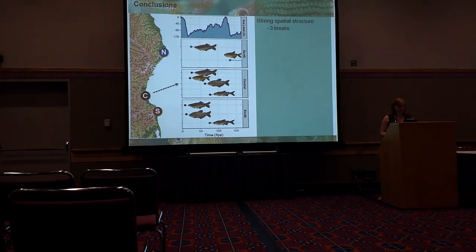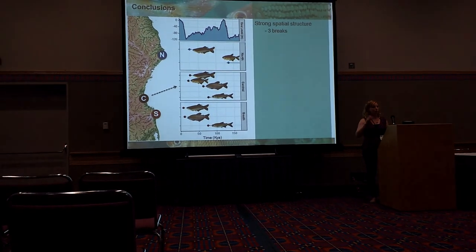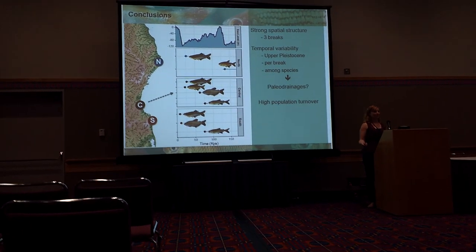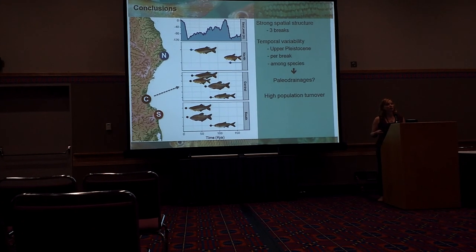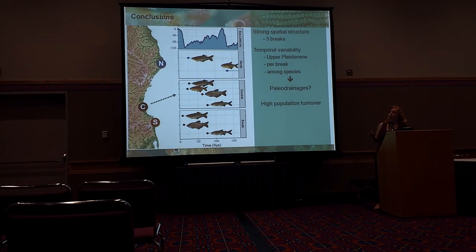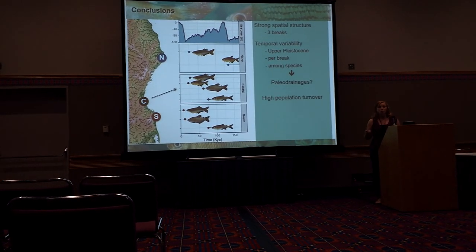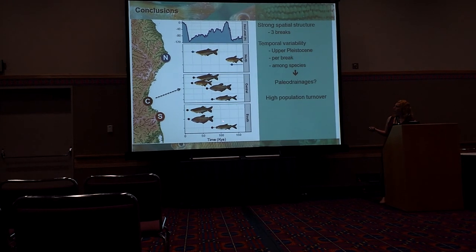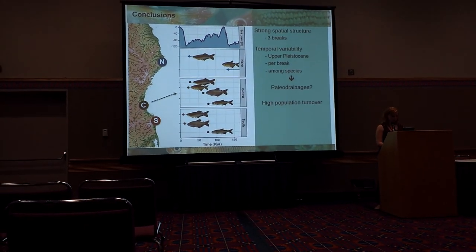Some take-home points: geographically, we see a strong spatial structure with three breaks, which corroborates a paleo-drainage scenario possibly driven by sea level divergences. But temporally, there is high temporal variability. First, it's important to note that all divergence times are within the upper Pleistocene, so older divergences seem to have been erased from our genetic signal. We have high variability per break and among species, so if there were a strong pattern of divergences driven by paleo-drainage we would expect more congruence. It could be that some species have different dispersal capabilities or interact with the environment in different ways. These very different divergence times really point to a high population turnover in the coast, consistent with the ephemerality of species there.